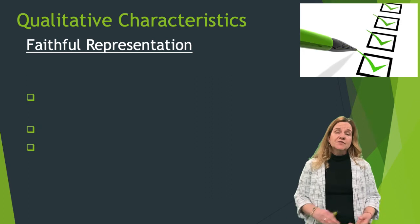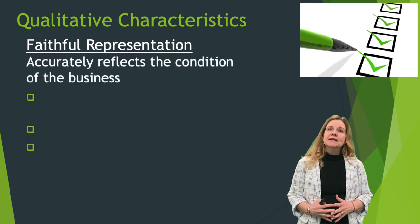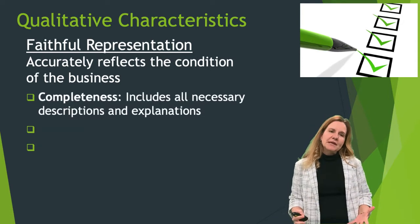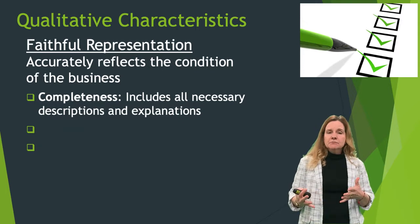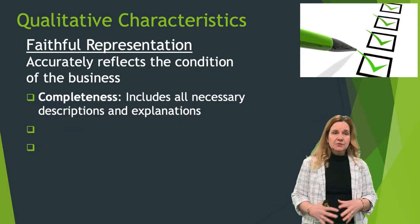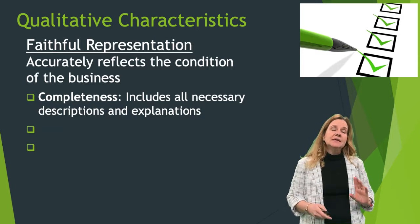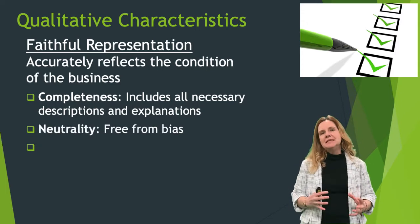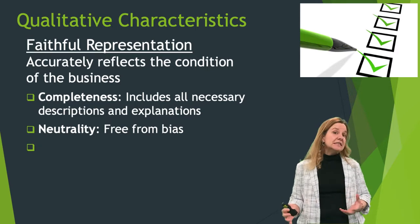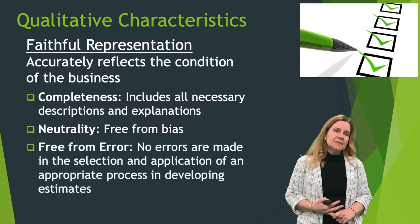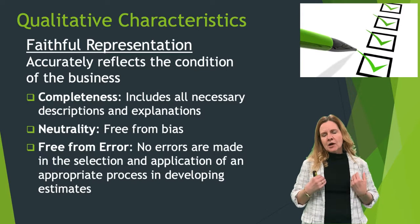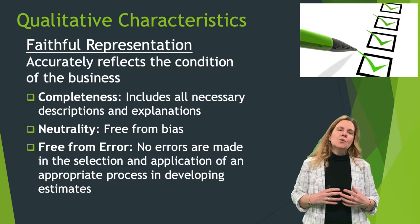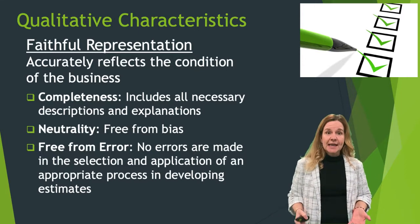The next part of qualitative characteristics is faithful representation — we need to accurately reflect the condition of the business. First, completeness: when we report information, we need to accurately describe it. For example, if we have accounts receivable, that's a current asset and it will be in the current asset section. We have to apply neutrality — it should be free from bias and we should not be trying to manipulate users into making a specific decision. It should also be free from error, meaning we are appropriately applying estimates and principles to eliminate as much error as possible.